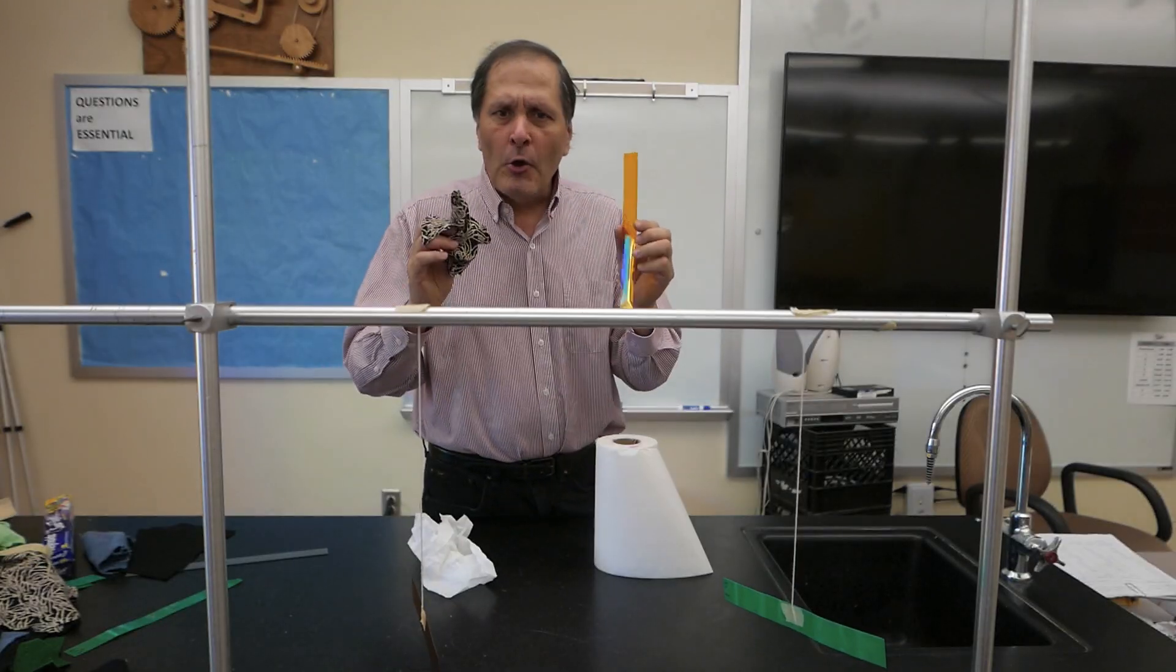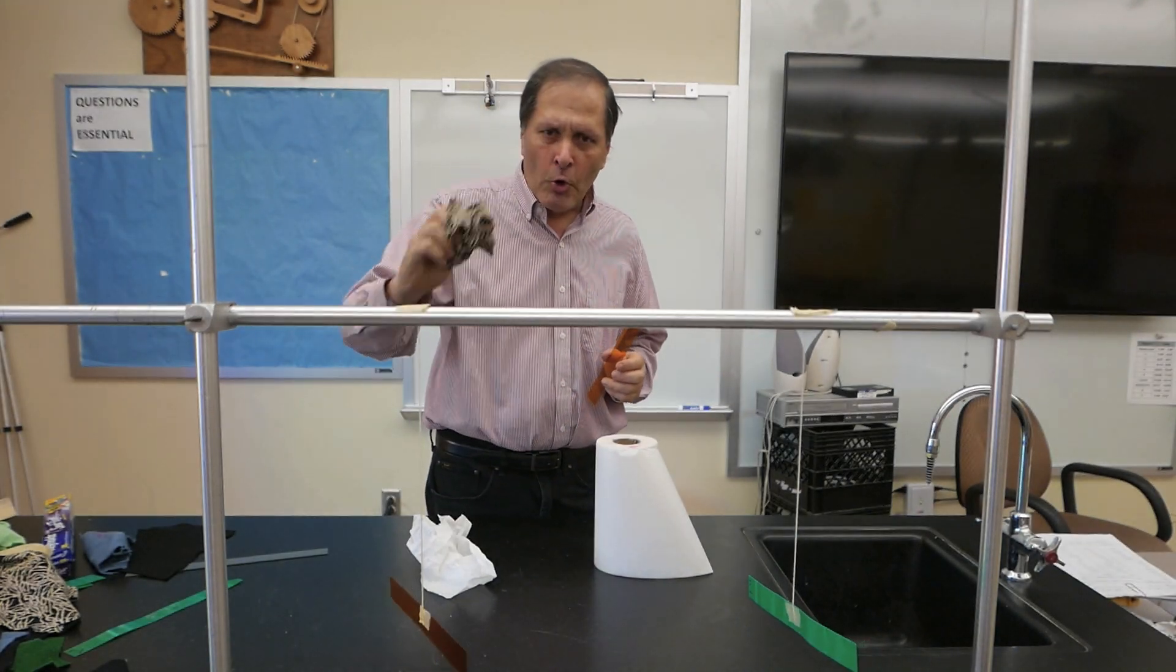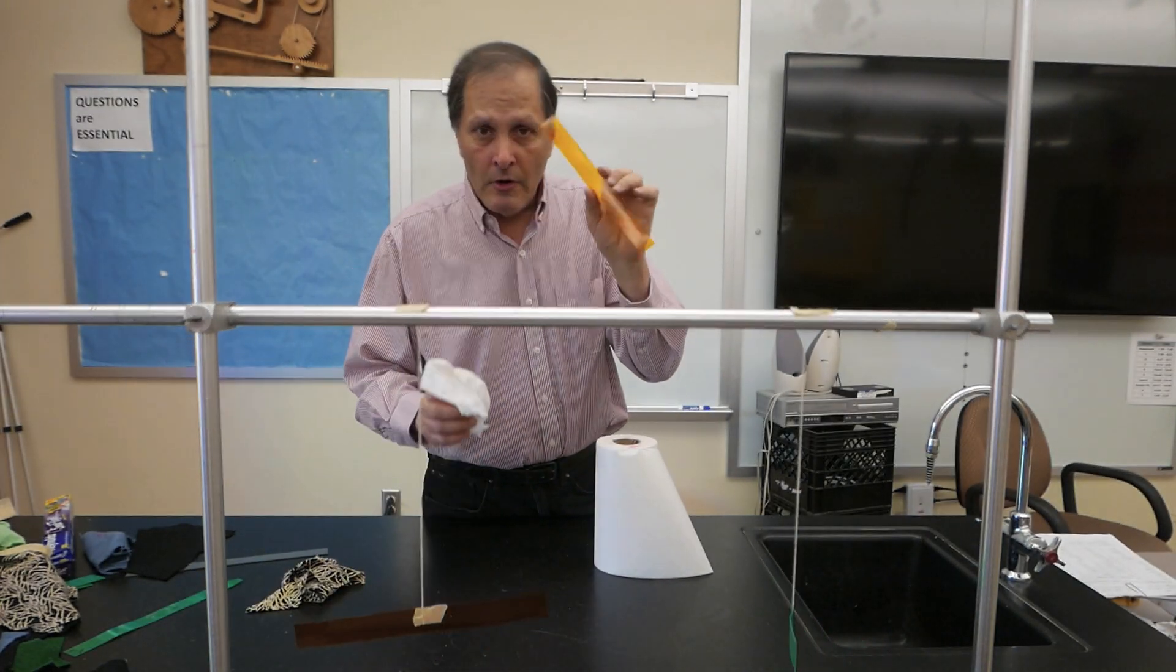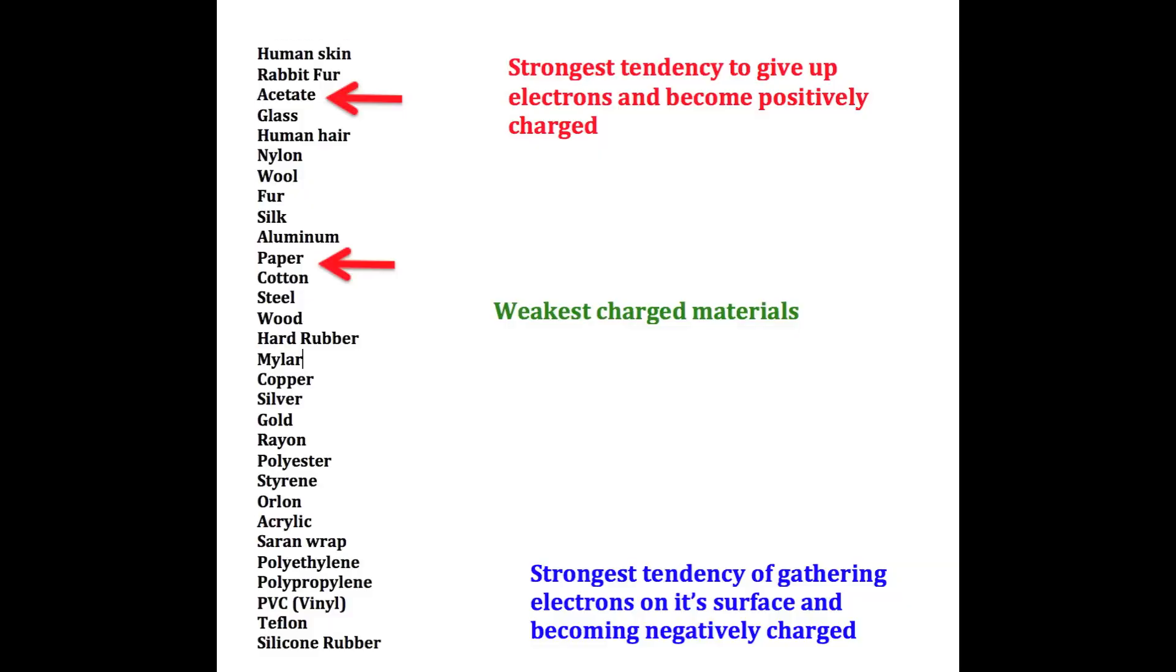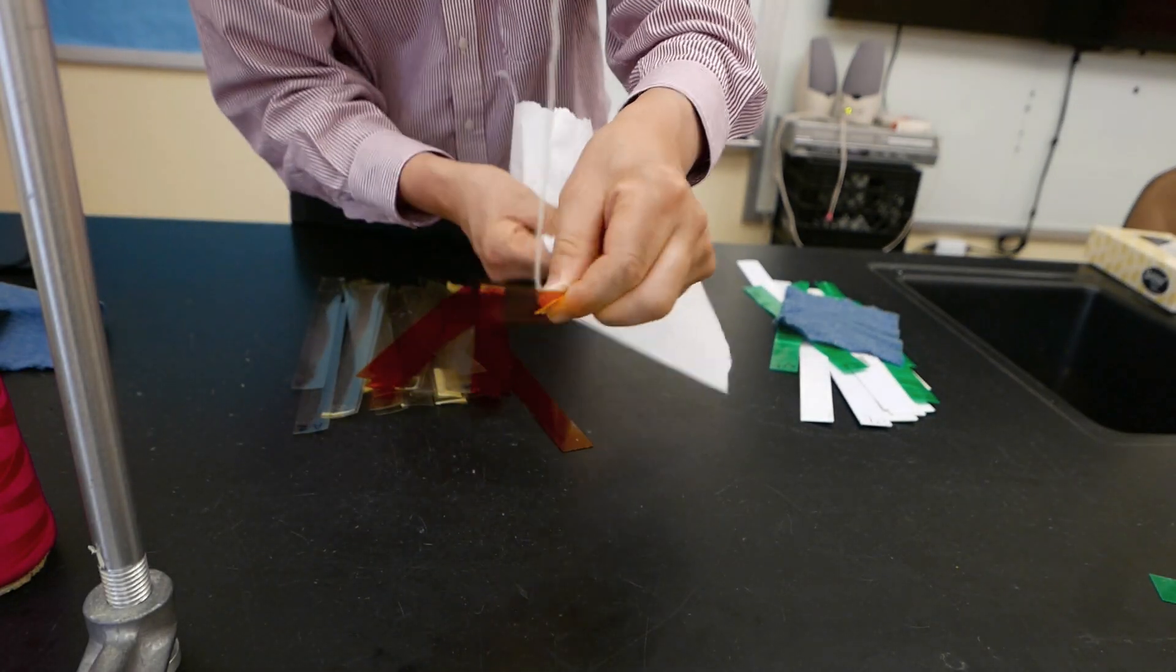We found that the materials don't even have to be at opposite ends of that table. I'm going to replace the orlon and simply rub the acetate with paper. And since acetate's higher on the list, it's the material that would become positively charged.